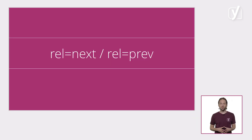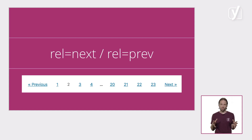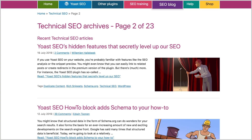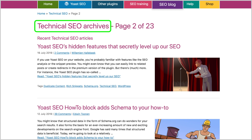We'll first discuss a small feature called rel="next", rel="prev". It's used when archives or posts stretch out over a couple of pages — we simply add a bit of code that defines the previous and next pages within the collection. Consider this page, for example: it's the second page of one of our tag archives, in this case technical SEO.